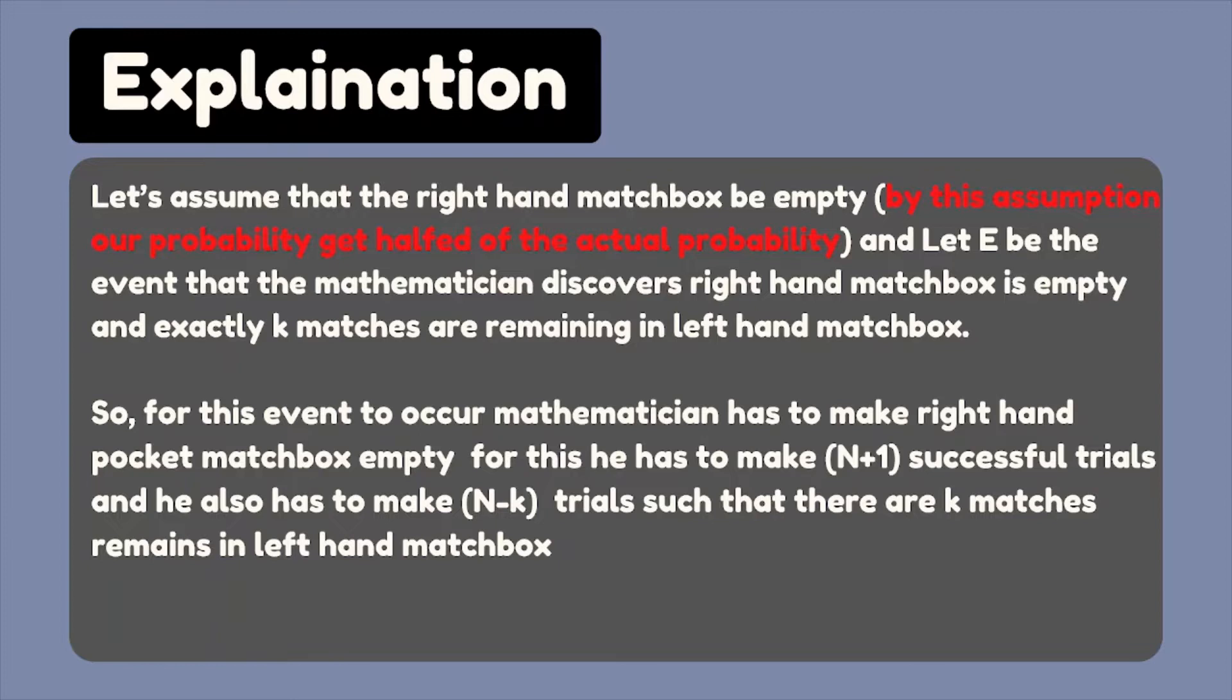let us assume that the right hand matchbox be the empty. By this assumption, our probability get half of the actual probability we have to obtain. And let E be the event that the mathematician discovered right hand matchbox is empty and exactly k matches are remaining in left hand matchbox.